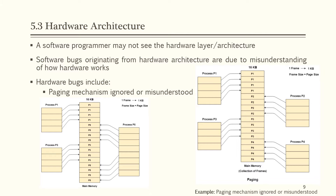Paging is a storage mechanism in operating systems used to retrieve processes from secondary storage into main memory in the form of pages. Each process is divided into pages while main memory is divided into frames. One page of a process is stored in one frame of memory, and the priority is to find contiguous frames.